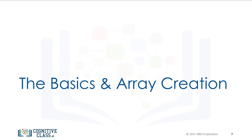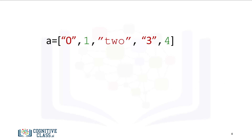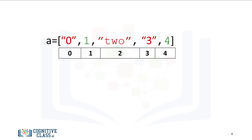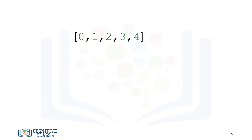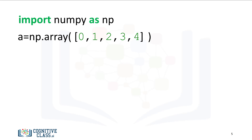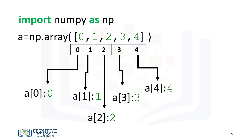Let's go over how to create a NumPy array. A Python list is a container that allows you to store and access data. Each element is associated with an index. We can access each element using a square bracket. A NumPy array, or nd array, is similar to a list. It's usually fixed in size, and each element is of the same type, in this case integers. We can access the data via an index, using an integer and a square bracket.